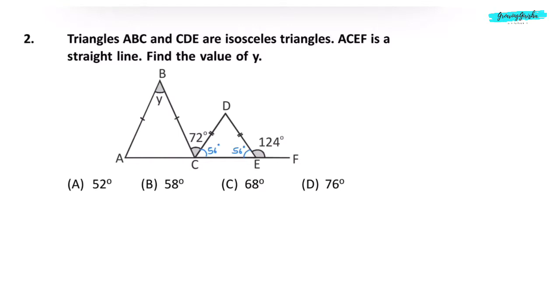Now, we will find the value of C in triangle BAC. It will be 180 minus 72 plus 56. 72 plus 56 is 128. So 180 minus 128 is equal to 52 degrees. Angle C is 52 degrees. Angle A will also be 52 degrees because this triangle is also isosceles.